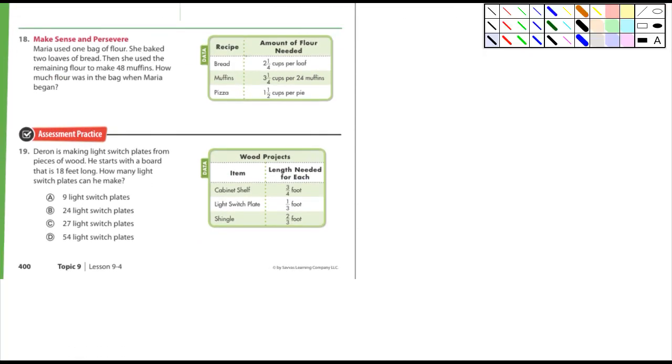All right, I'm almost done here. 18: She baked two loaves of bread and then she used the remaining flour to make 48 muffins. How much flour was in the bag when she began? Oh, interesting. So figure out how much flour she used to make the bread, how much flour she used to make the muffins, and then add those up.